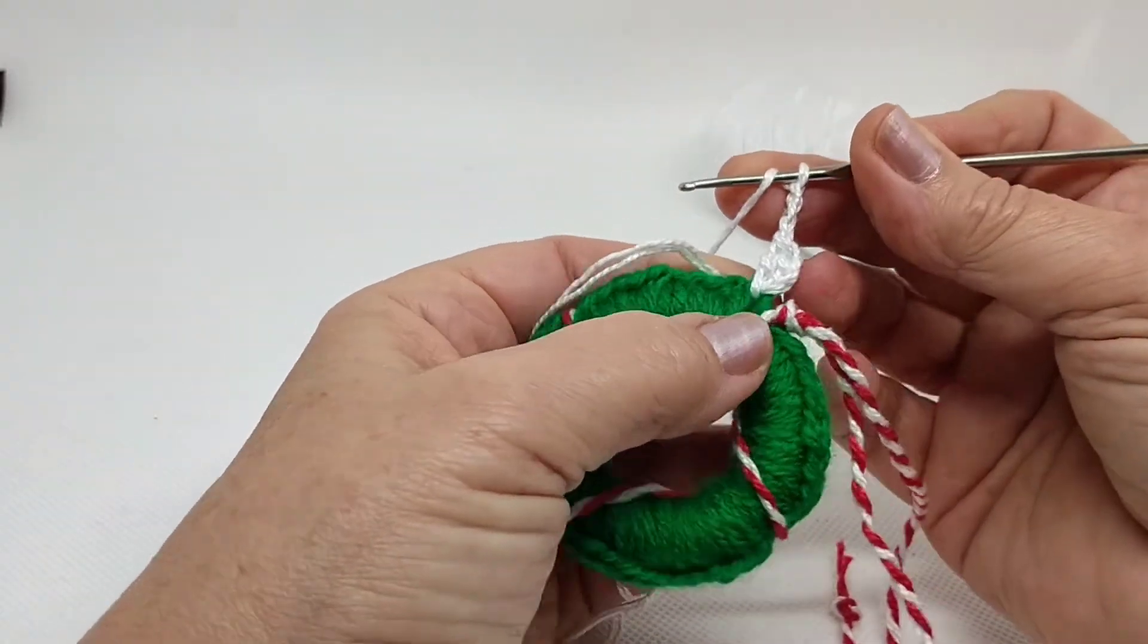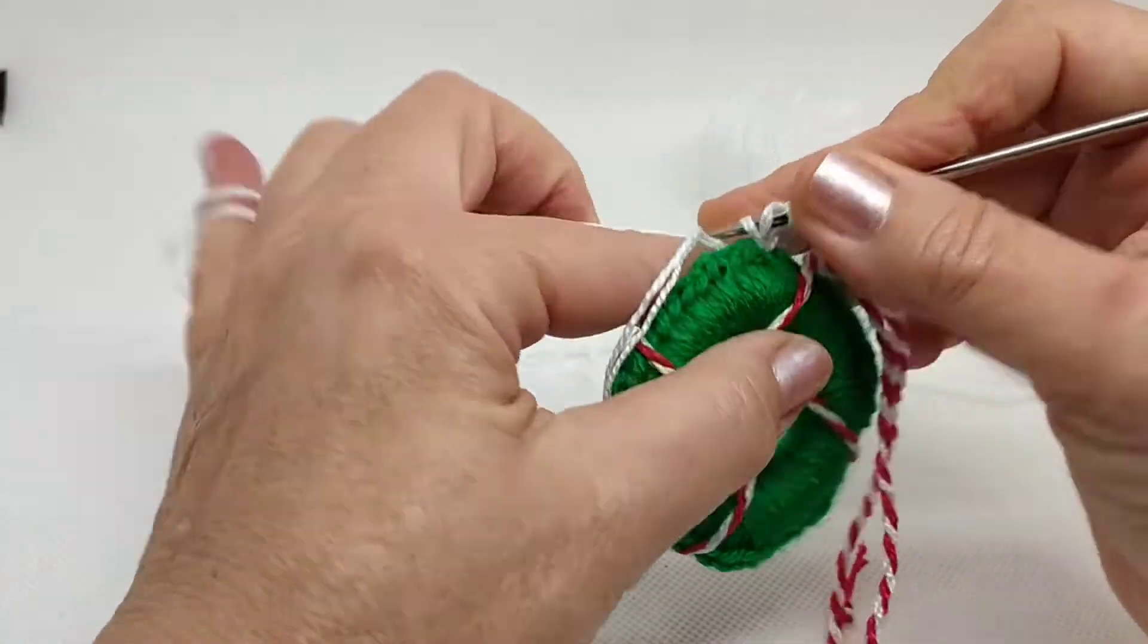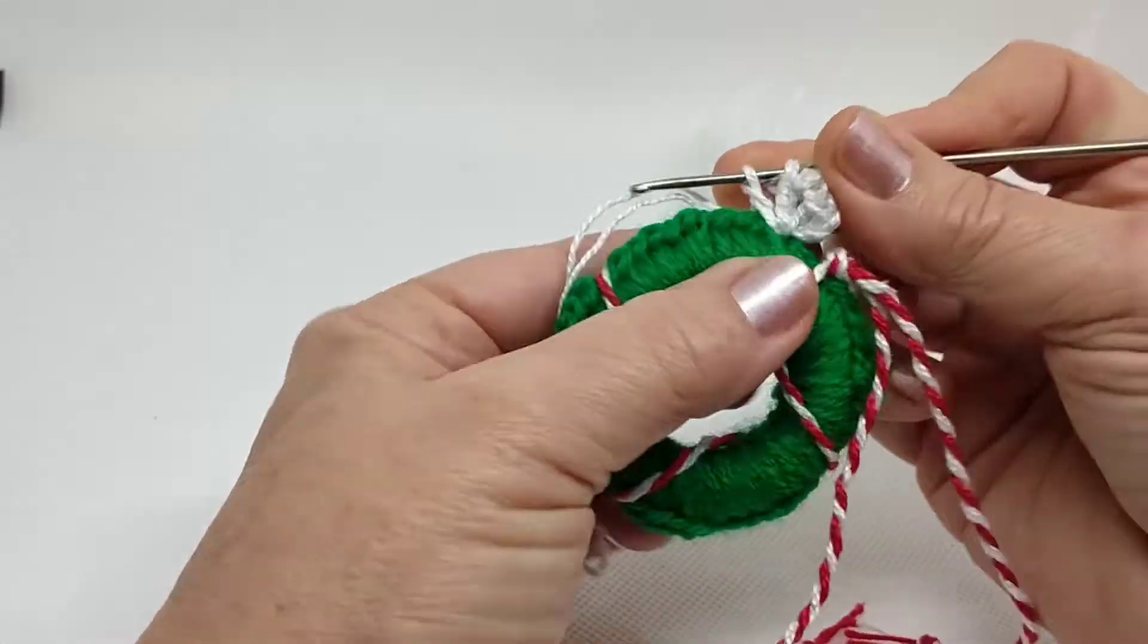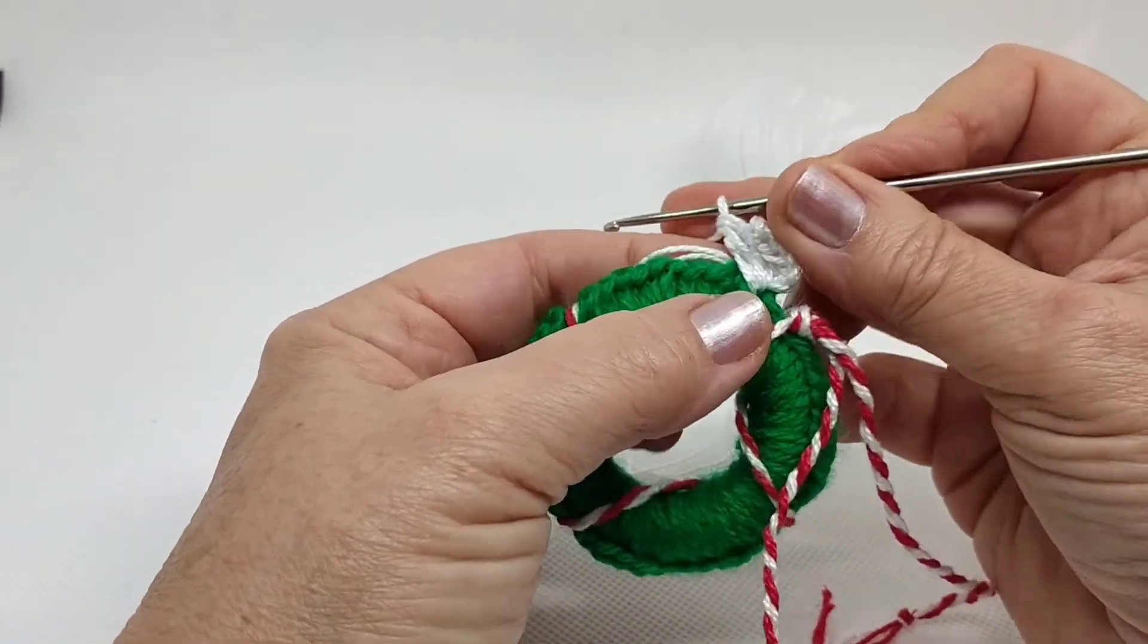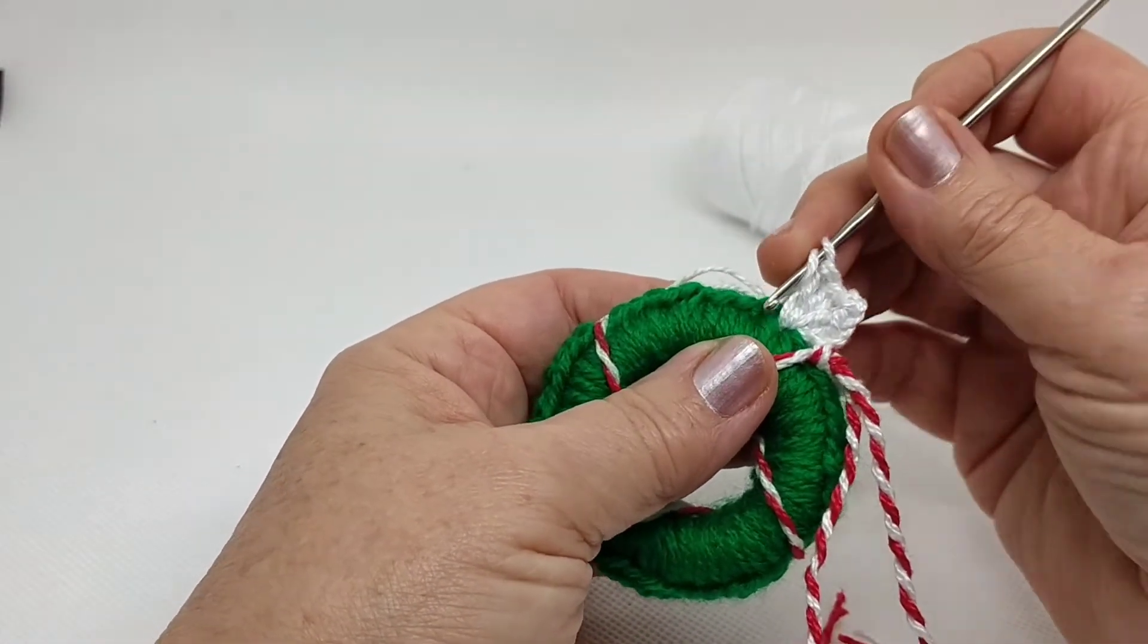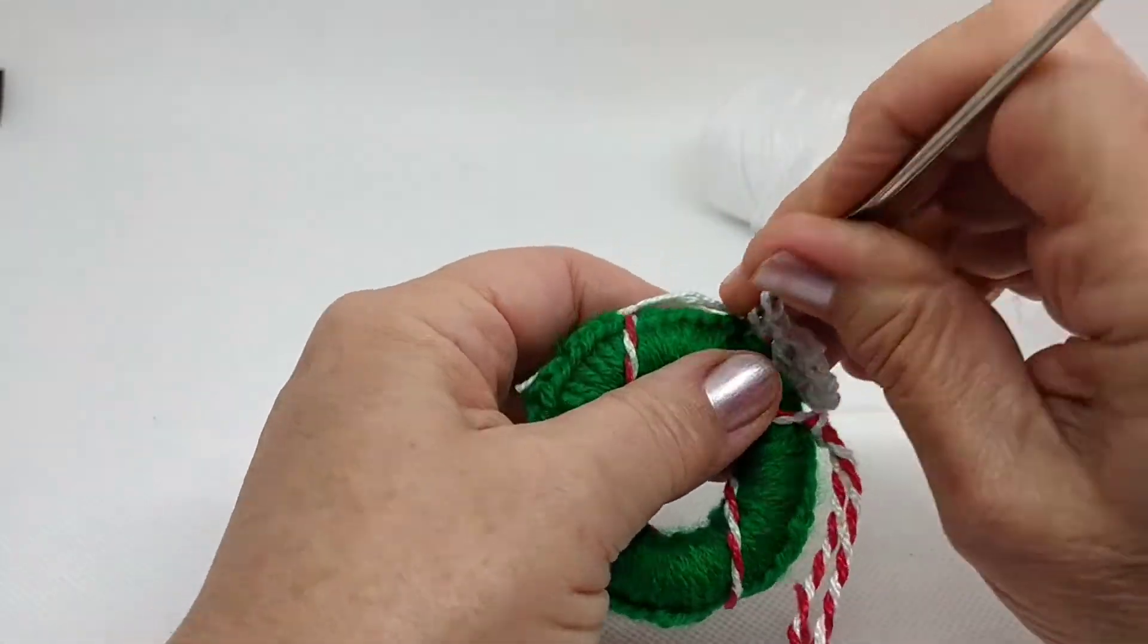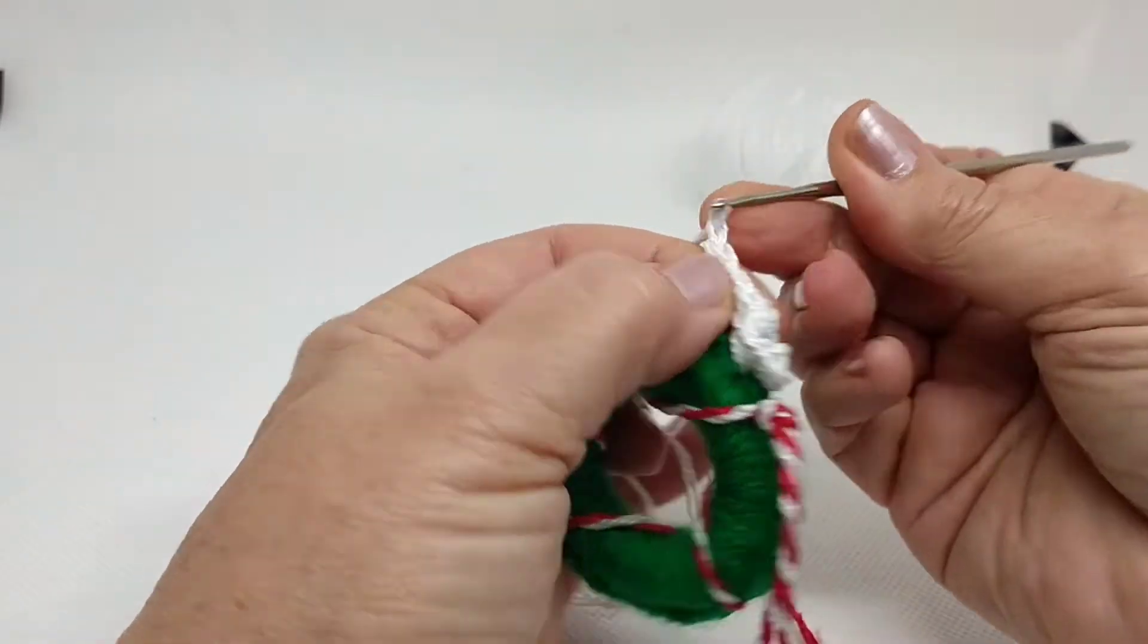Vuelvo a hacer punto alto, cojo lazada, vuelvo al mismo punto y hago otro de estos puntos altos. Uno y dos. Al mismo tiempo vamos a ir escondiendo este cabo de aquí. Vuelvo a coger lazada para hacer otro punto alto pero saltando tres puntos. Uno, dos, tres. En el que hace cuatro pincho y hago dos puntos altos.